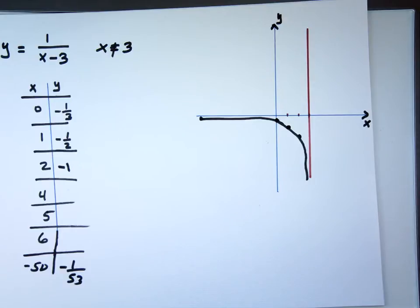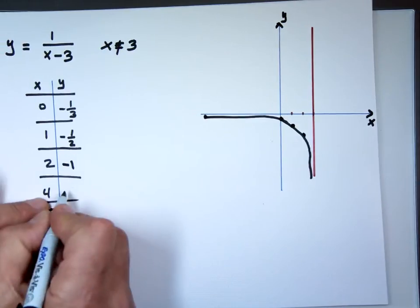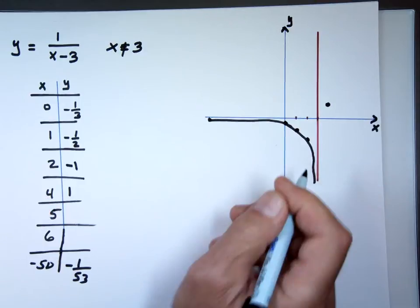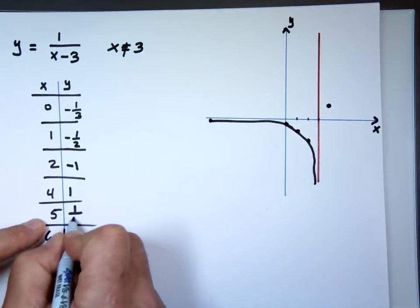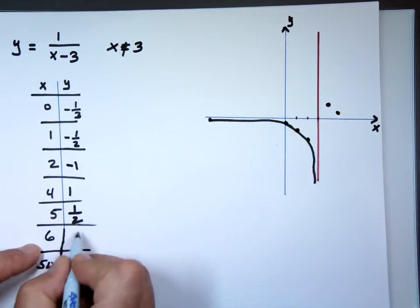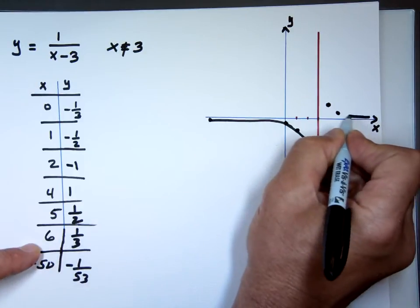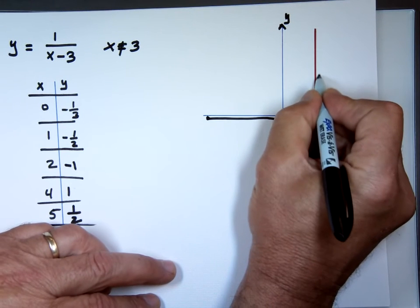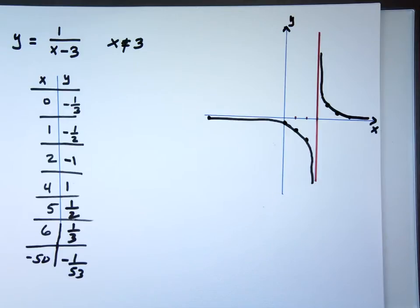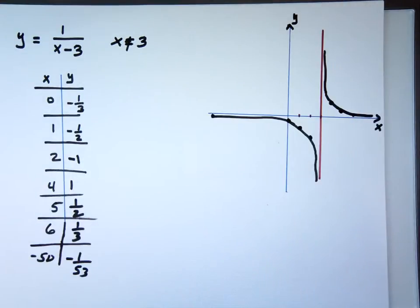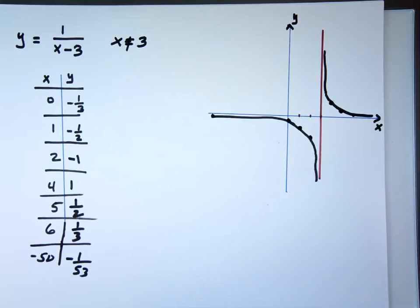On the right side of the graph: when x is 4, y equals 1, so the point is (4, 1). When x is 5, y equals 1 half. When x is 6, y equals 1 third — it's shrinking. The graph approaches the red line from the right going upward but never touches it.